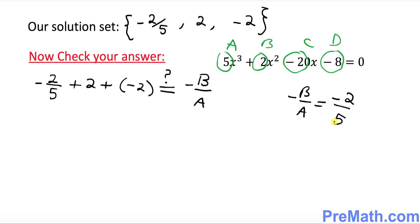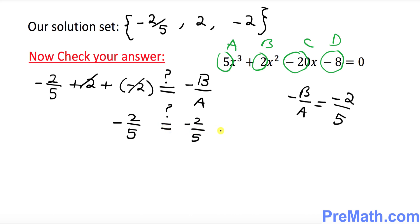So we want to see that negative b over a equals negative 2 fifths. On the left-hand side, positive 2 and negative 2 cancel out, leaving negative 2 fifths. Negative 2 fifths on the left-hand side equals negative 2 fifths on the right-hand side — that means we are checked, our answer is correct. Thanks for watching.